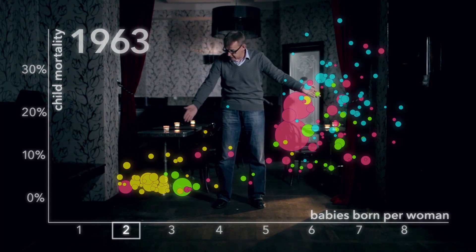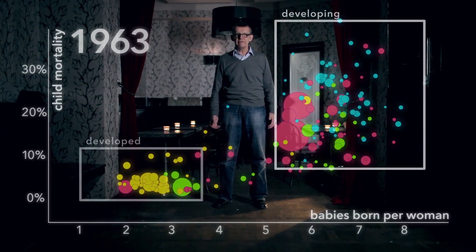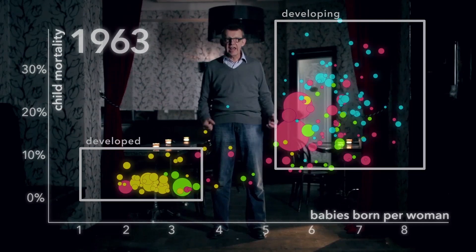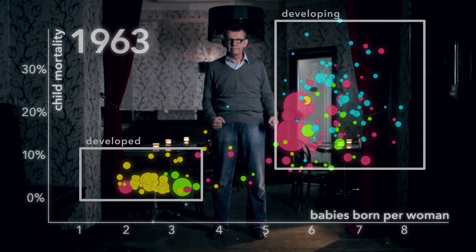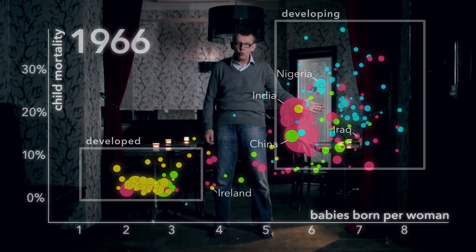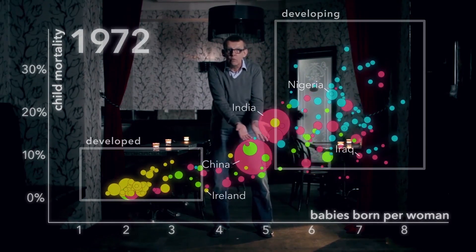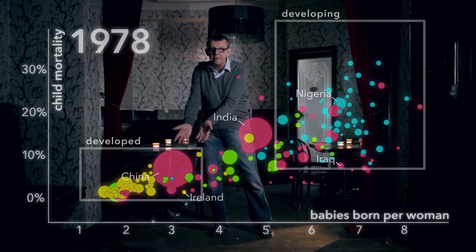From eight to less than two. In many people's mind, the world still looks like this — developing and developed. But it's a myth! Because the world has improved immensely in the last 50 years. Here we go. Year by year, child mortality fell in almost all countries. And as child mortality fell, women chose to have fewer and fewer babies.